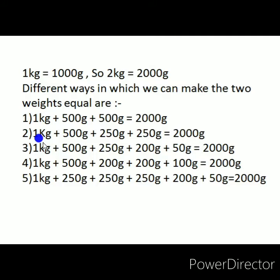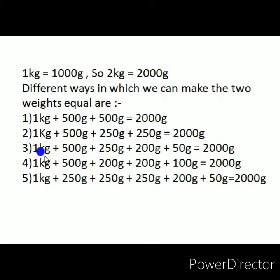We have been given weights of 500 gram, 250 gram, 200 gram, 100 gram, and 50 gram. So the second combination is 1 kg plus 500 gram plus 250 gram plus 250 gram, totalling 2000 grams. This is another way of balancing both pans.